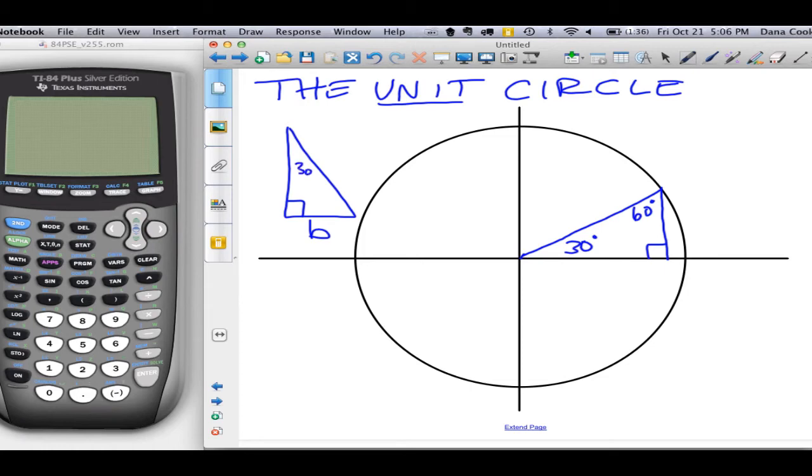The shorter leg, opposite the 30 degree angle, has the length of B. And then the hypotenuse would have a length of 2 times that value, or 2B. And the longer leg, opposite the 60 degree angle, would have a length that is equivalent to B times the square root of 3.